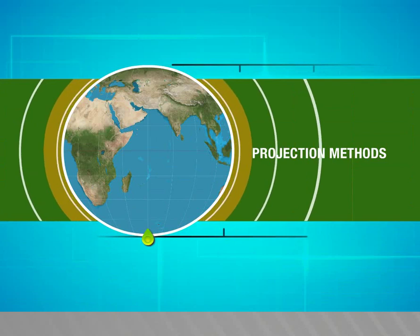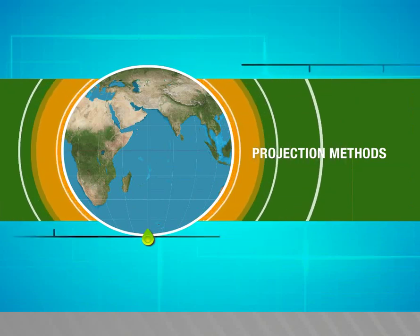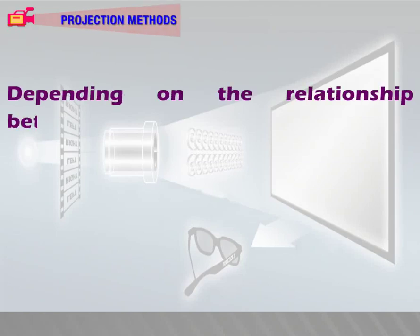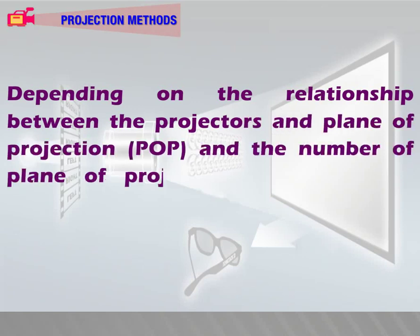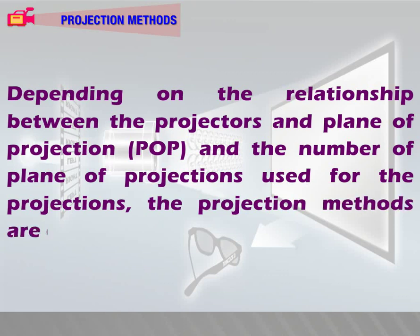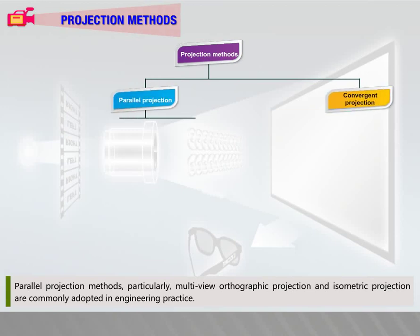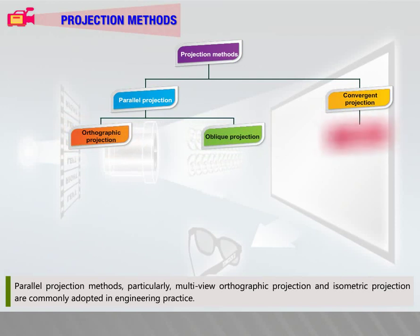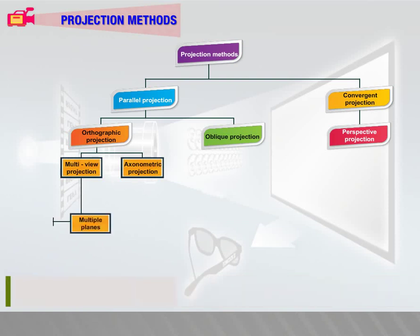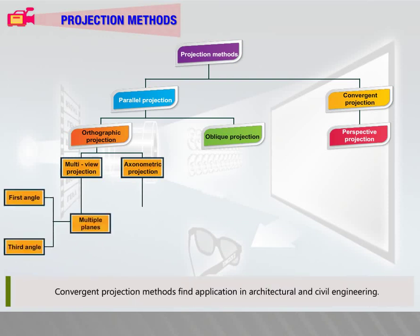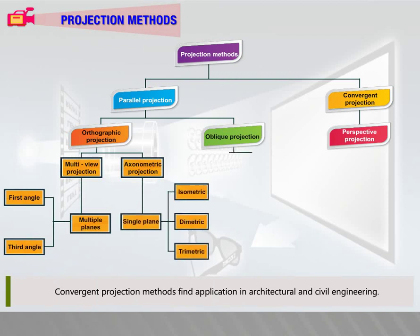In this video we are going to see about the projection methods. Depending on the relationship between the projectors and plane of projection (POP) and the number of planes of projection used, the projection methods are classified. Parallel projection methods, particularly multi-view orthographic projection and isometric projection, are commonly adopted in engineering practice. Convergent projection methods find application in architectural and civil engineering.